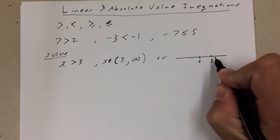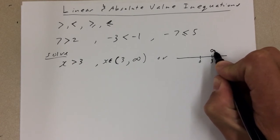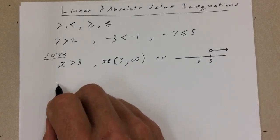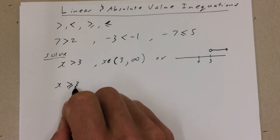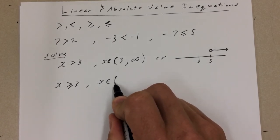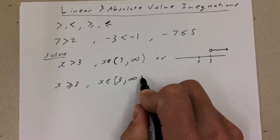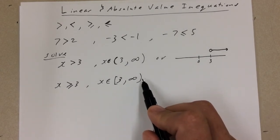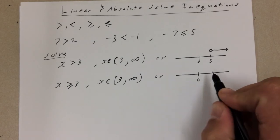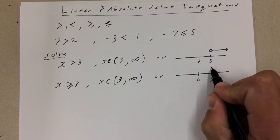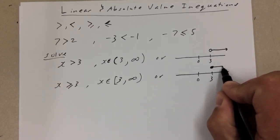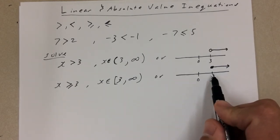On a number line, if that point is 3, we have a hollow circle with an arrow going towards infinity. If we had something like x is greater than or equal to 3, we use a square bracket — so the interval is [3, infinity). Infinity still always has a round bracket next to it. On the number line, instead of a hollow dot, we have a solid dot, meaning 3 is included.